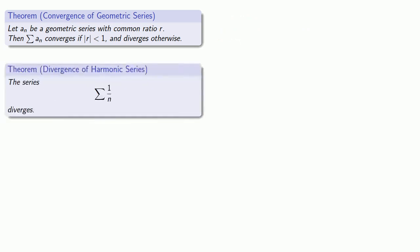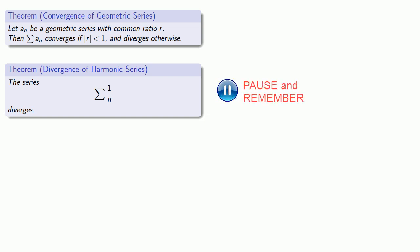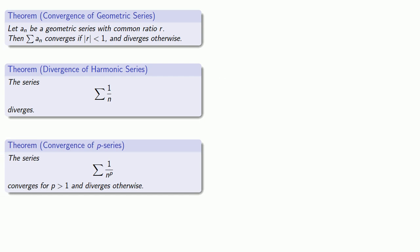Next, the series whose terms are 1 over n — the harmonic series — diverges. The divergence of the harmonic series is a special case of a more general type of series known as a p-series. For a p-series of the form 1 over n to the power p, the series converges if p is greater than 1, and diverges for p less than or equal to 1.